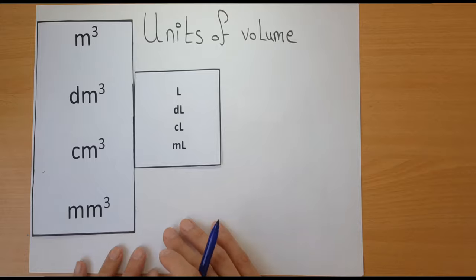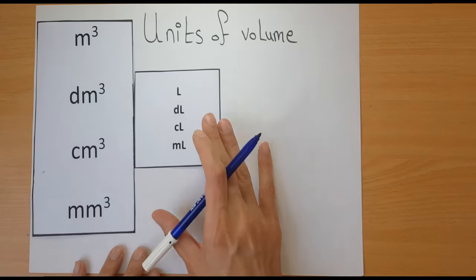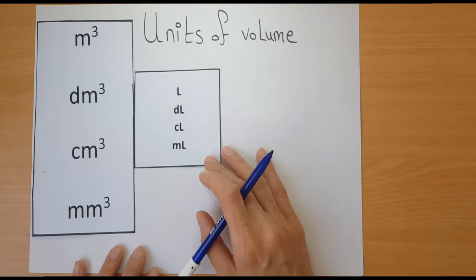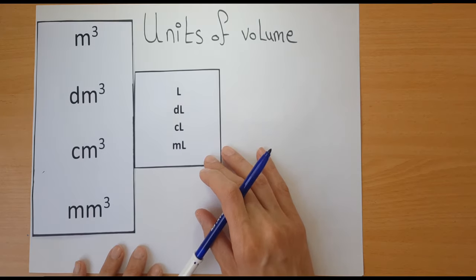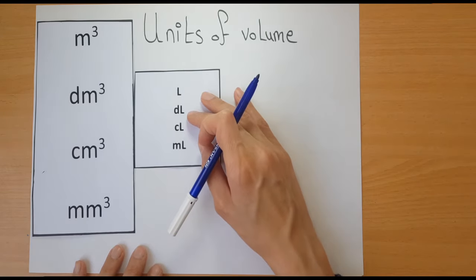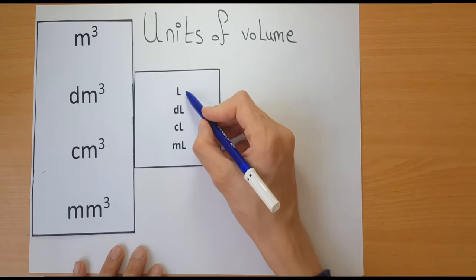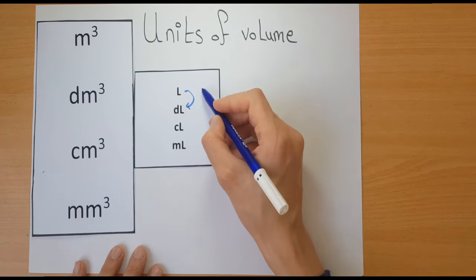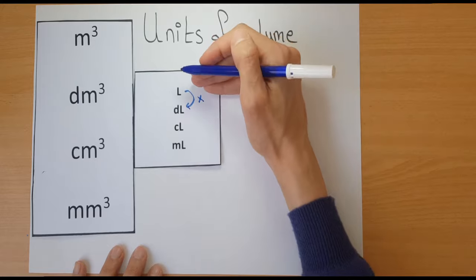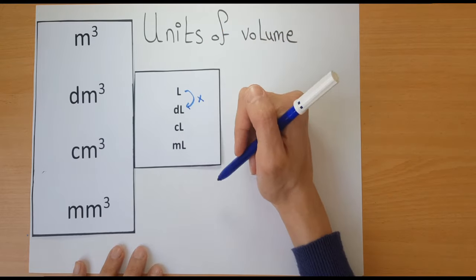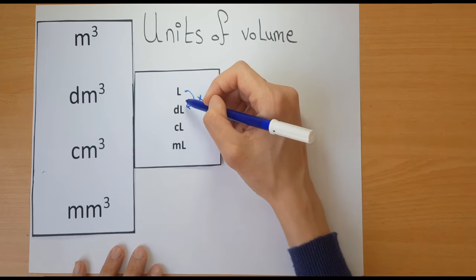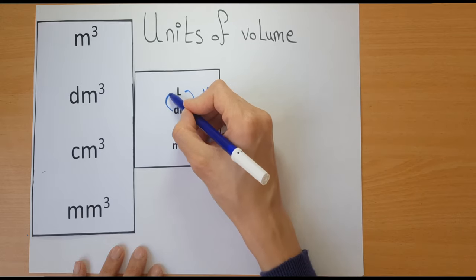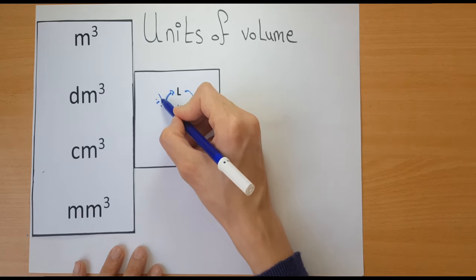How do we convert between these different units? Let's start with the liter and the subunits. If we want to convert from liter to decilitre, then we are going down. When you go down, you multiply, because you're going from the large unit to the small unit. Each step you go down, you multiply by 10, and each step you go up, you divide by 10.